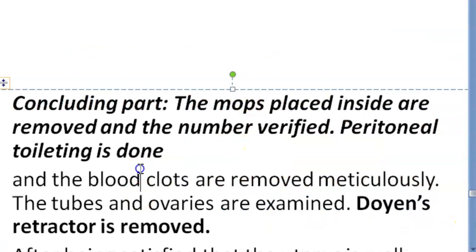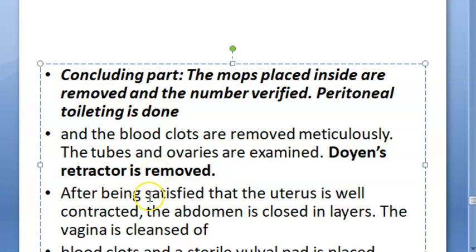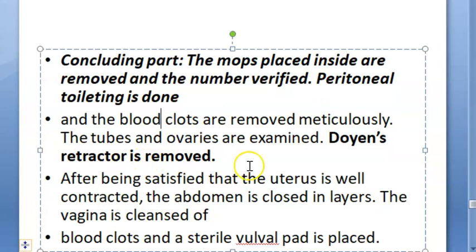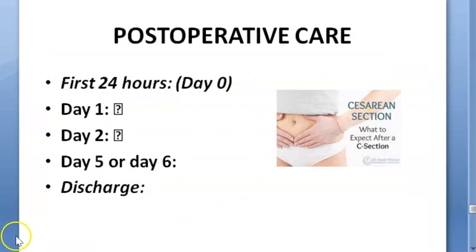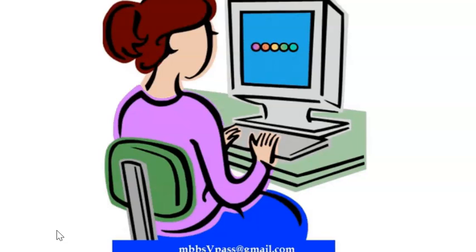After this, you will remove all the mops. You will count the number of mops. Then you will do toileting. You will remove everything inside. Blood clots are removed. Then you will examine the tubes and ovaries. You will remove the Doyen's retractors. See how many times you are putting it and removing it. Then you are checking that the uterus wall is contracted. Then there is no bleeding. Then abdomen is closed in layers. Then vagina is cleansed of blood clots. Post-operative care we will look in the next video. So now what we have done? All the cuts, removed the baby, placenta. We have also put the sutures. Next video we will continue with the post-operative care.